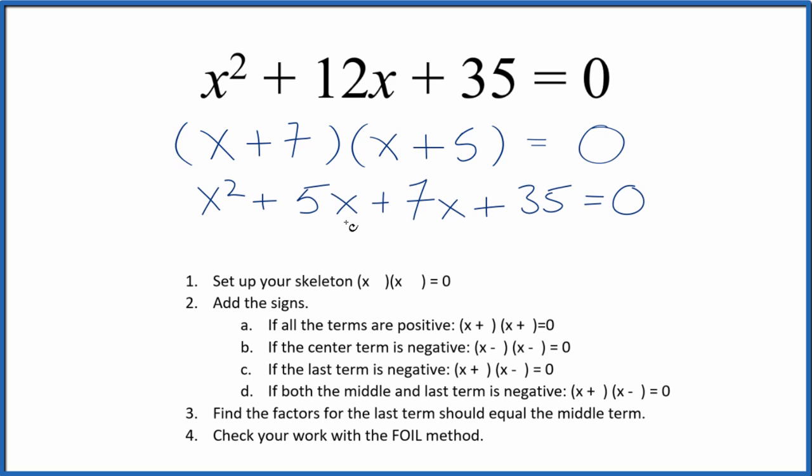That gives us, and we can combine these two terms here, and that's the same thing we started with. So we know we did this part correctly. We correctly factored x squared plus 12x plus 35.